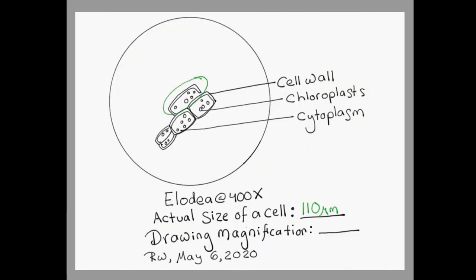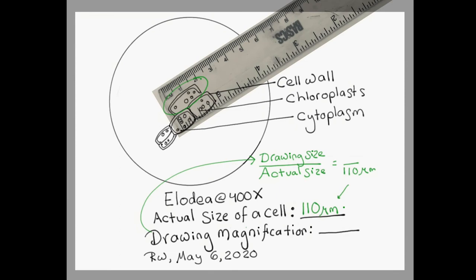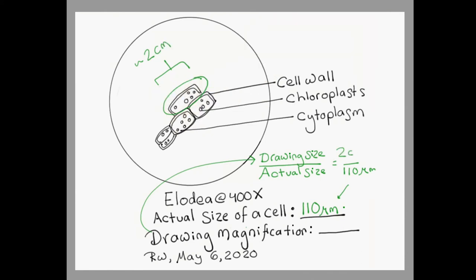We are now going to determine the drawing magnification, which is how much larger you have drawn your image than it actually is. We know the actual size of the cell is about 110 micrometers, based on the calculations that we just did. The drawing magnification is simply the size of the drawing of the cell divided by the actual size of the cell. We can now measure the size of our drawing of the cell, and it looks like we've drawn it at about 2 centimeters. Notice that the units don't match up in this equation, so we're going to have to convert centimeters into micrometers before we continue.